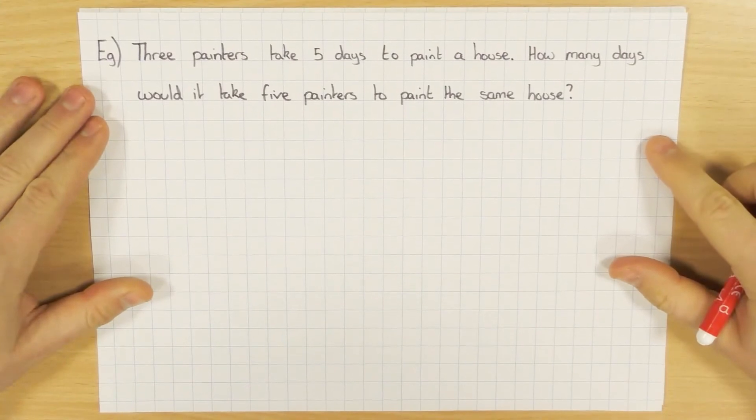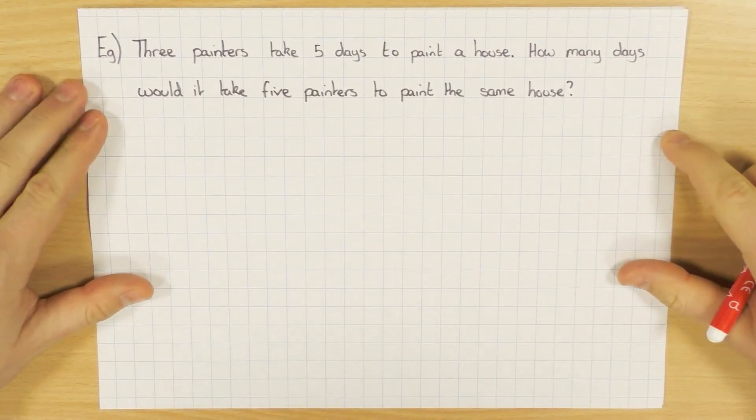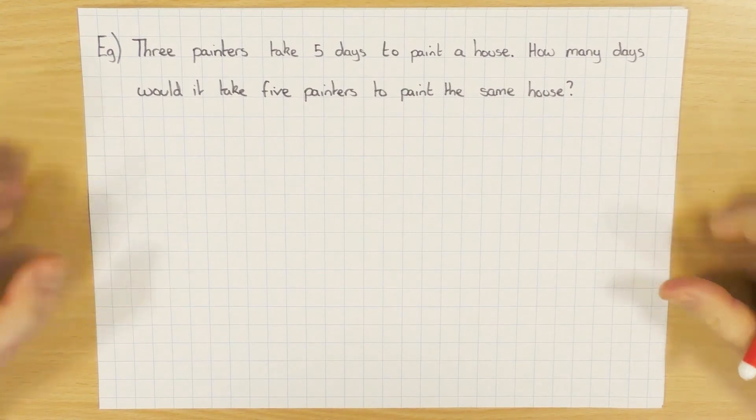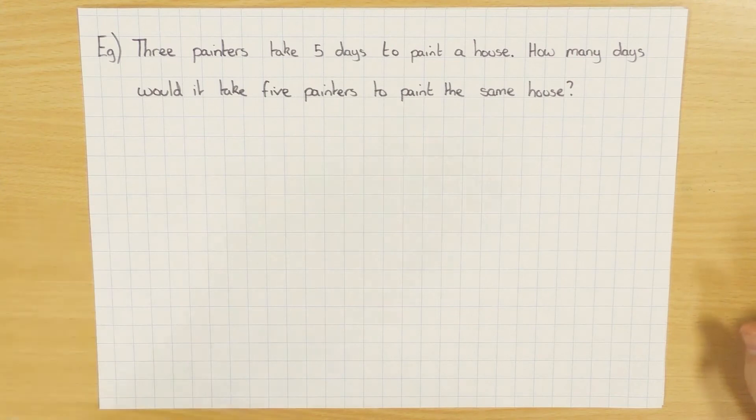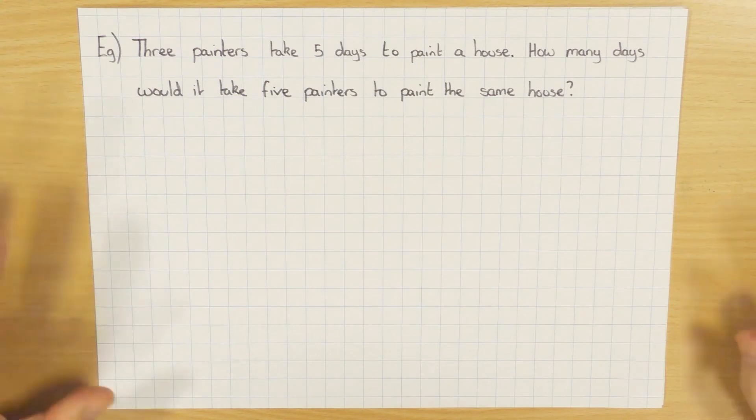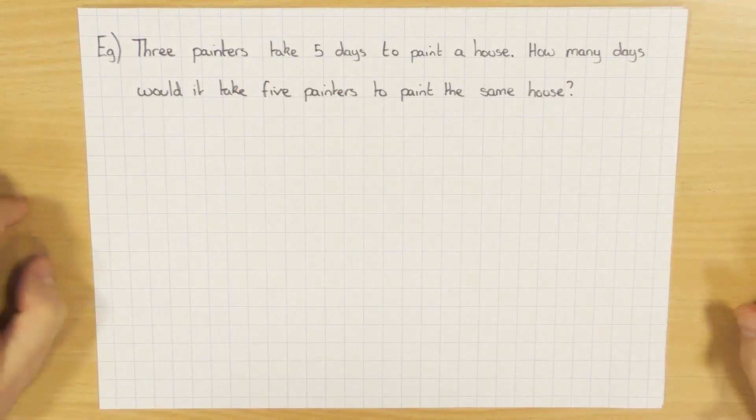We'll just have a look at the idea of direct proportion, whereas one thing increases, the other thing increases by the same amount each time. This is an example of inverse proportion. So this is something that you'll have to read the question and use a little bit of common sense to judge whether or not you need to do what we're now about to do.